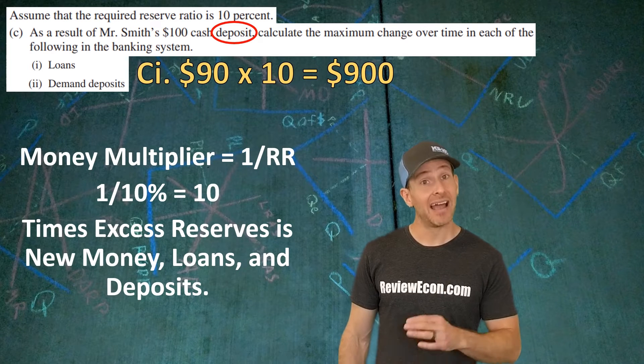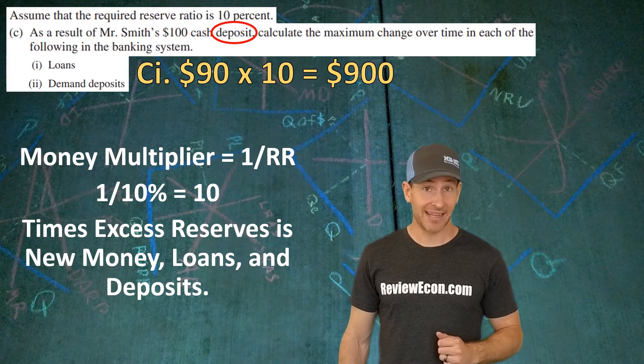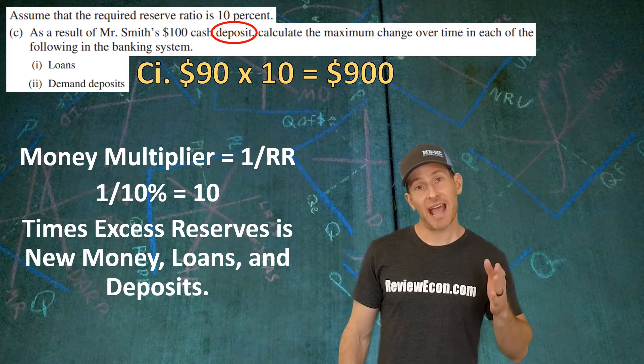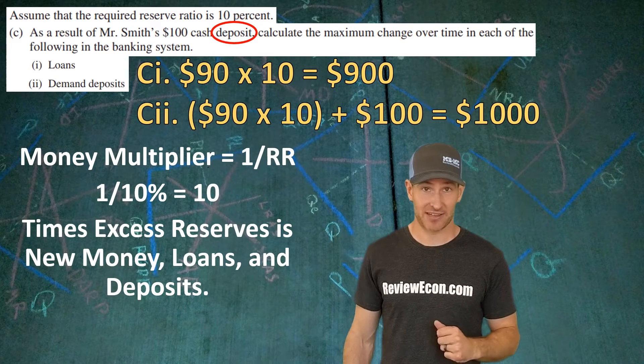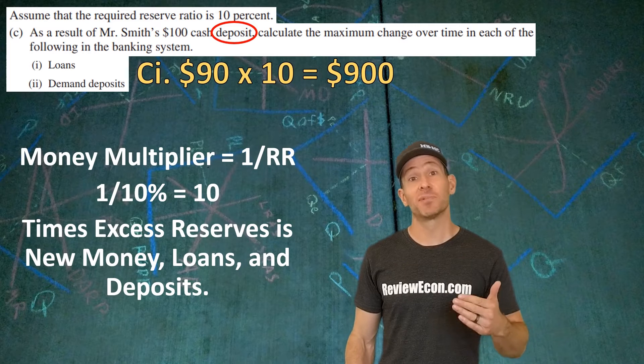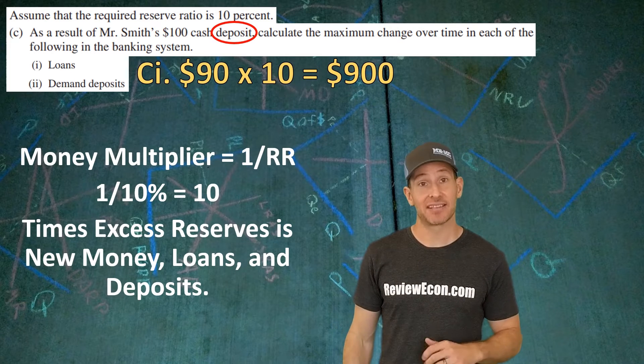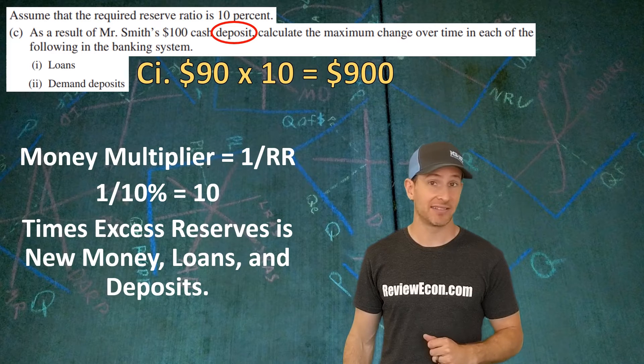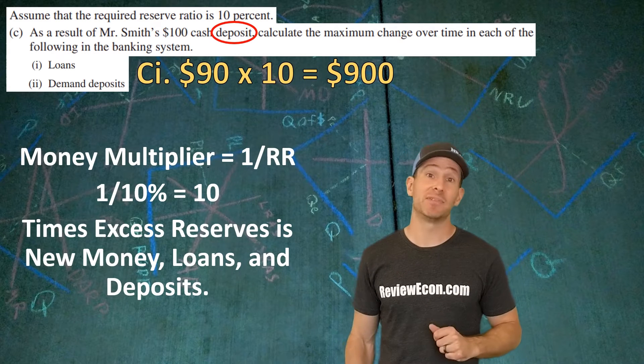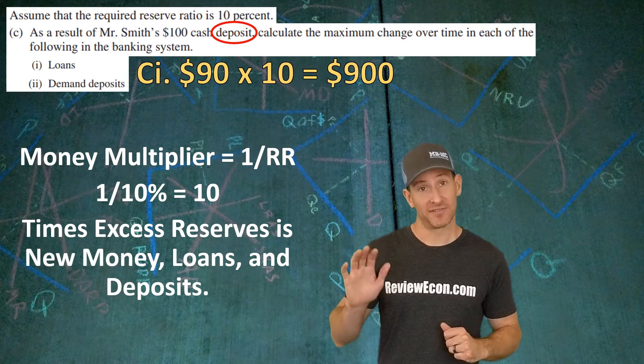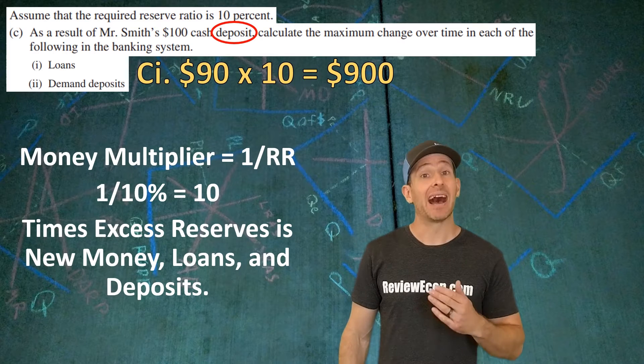For CII, they don't ask us about loans, they ask us about deposits. The deposit that Mr. Smith made was a new deposit, so we have to add his original $100 back in. That means it's not just $900 of deposits that are made from the excess reserves, it's the $900 plus the original $100 deposit that he made. Add those together and it gives us $1,000 worth of new deposits that can be made from his original deposit. An alternative way of calculating this would be 10 times the entire deposit of 10 times $100. And that's what you see in the rubric for this question. This is just an alternate way to get it, and I prefer this method.